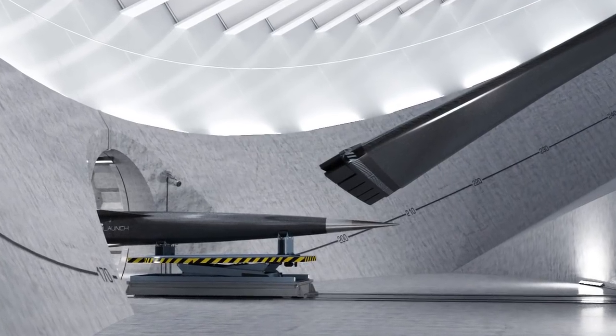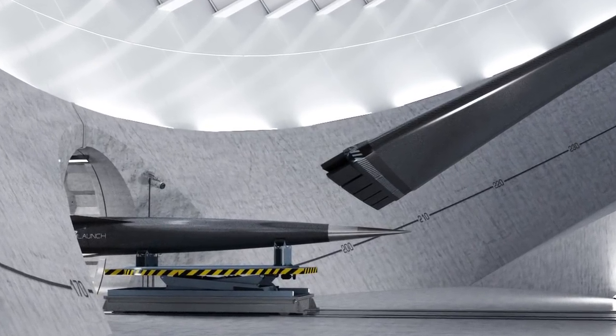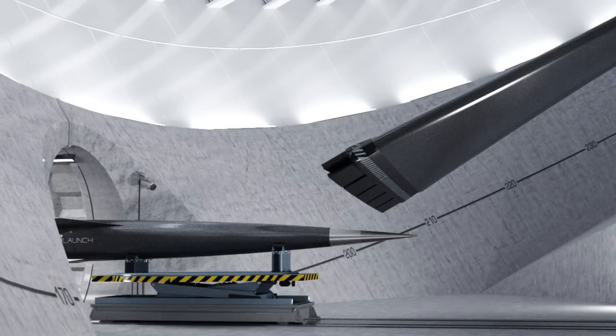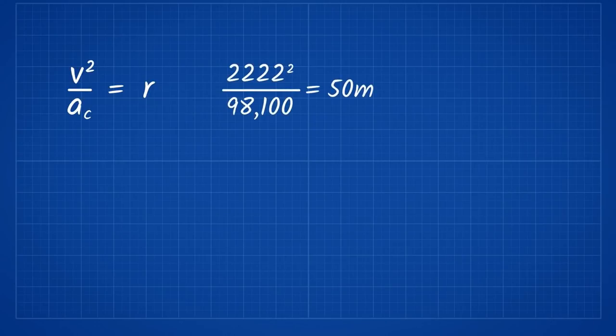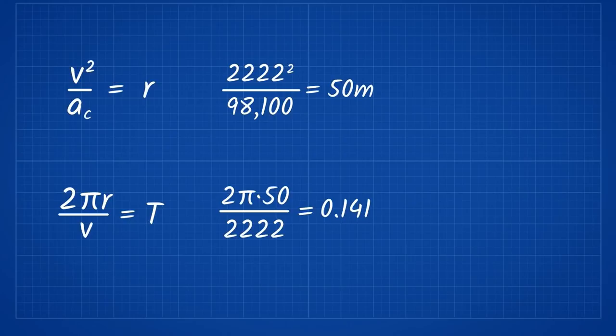Using the circular motion formulas, we can determine how many times per second the centrifuge is spinning. Using velocity squared over the centripetal acceleration will give us the radius, which equates to about a 50-meter radius centrifuge. Next, we can use the 2πr over velocity formula to give us the period of rotation. This comes out to be 0.141 seconds per rotation, which if we take the reciprocal of that, we get 7.1 rotations per second.